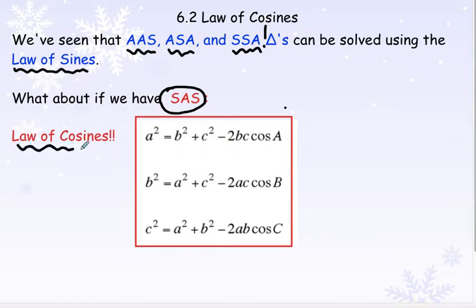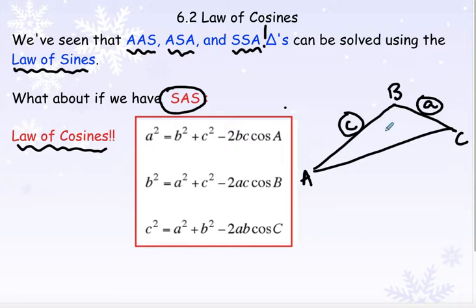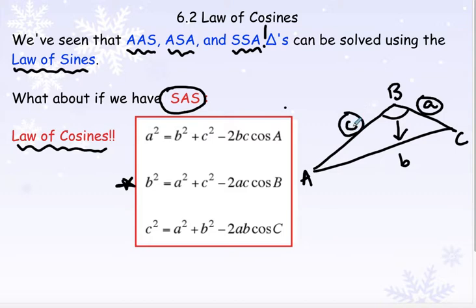So we have what is called law of cosines. Here are your formulas for law of cosines. The general idea is that we would be given two sides — let's say side A and side C — and we would have to know the angle between those two sides, angle B, in order to solve for the side across from angle B. If I want to solve for side B, I take side A squared plus side C squared minus two times A times C times the cosine of the angle in between.